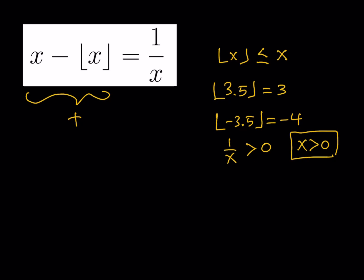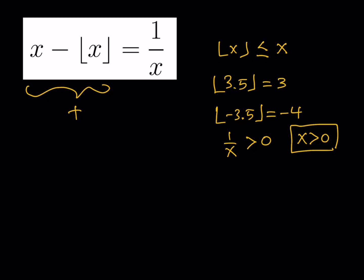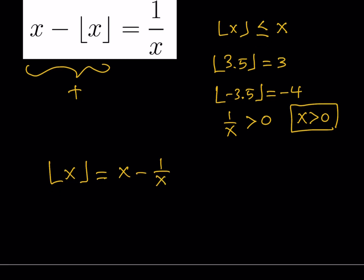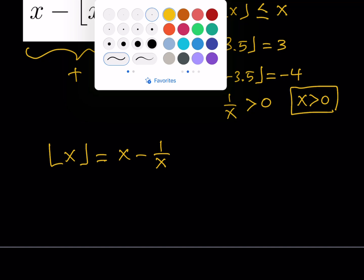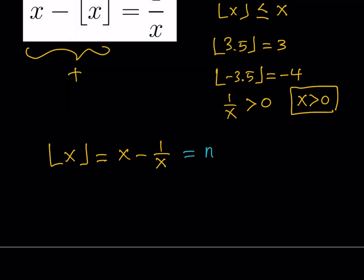Let's take that into consideration as we solve this problem. One thing we can do is isolate the floor value of x. So we can write the floor value of x equals x minus 1 over x. Most floor value problems can be solved with substitution, so let's call floor(x) equal to n. By calling floor(x) equal to n, we get an inequality: since floor(x) is the greatest integer function, x must be between n and n plus 1, where n is an integer.